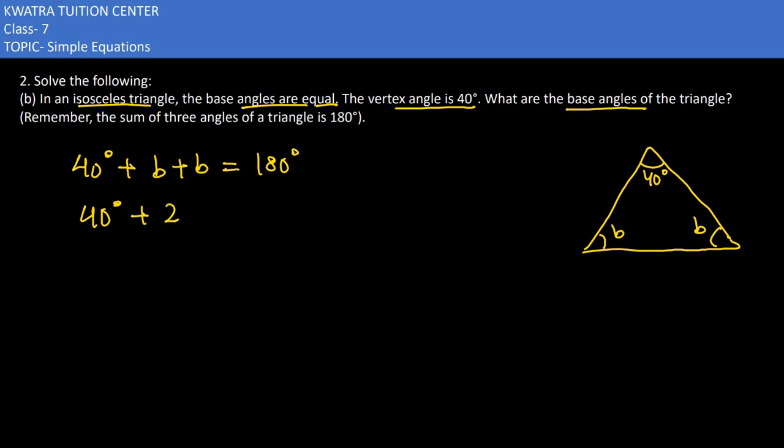We have 40 degrees plus b plus b on the left side, and 180 degrees on the right side. Moving 40 to the right side, it becomes 180 minus 40, which is 140 degrees.